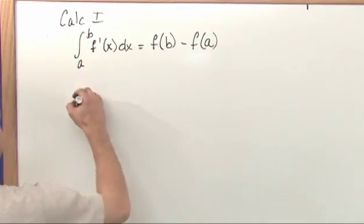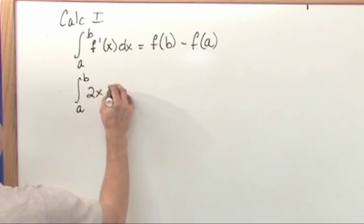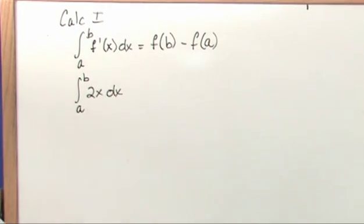Just to beat it into the ground, if you evaluate something from A to B, the function is 2x dx, way back from calculus 1. How do you do that?